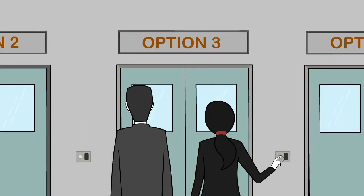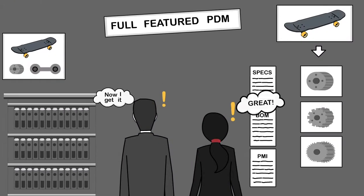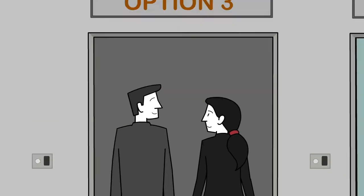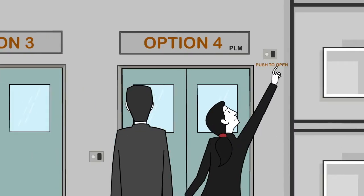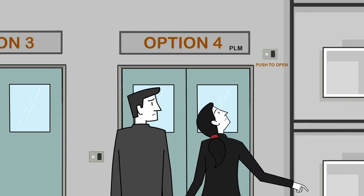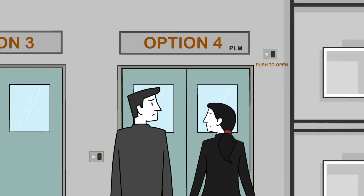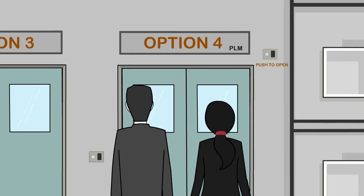Full-featured PDM helps to keep engineers organized and efficient, collaborate better, and avoid costly errors. PLM is very good at managing data and processes, but it's just out of reach for a lot of manufacturers, at least as a first step to get data under control.